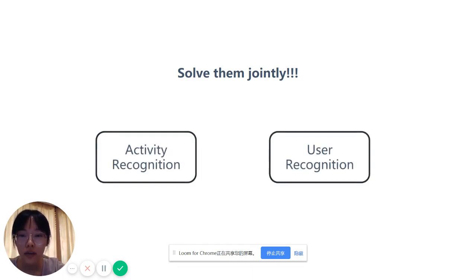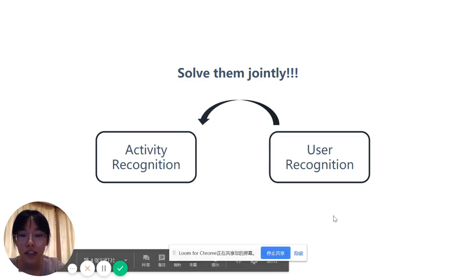For activity recognition, by introducing user-related knowledge, it can take users' characteristics into account. For user recognition, with the guidance of activity-related knowledge, it can automatically adapt to the current activity.